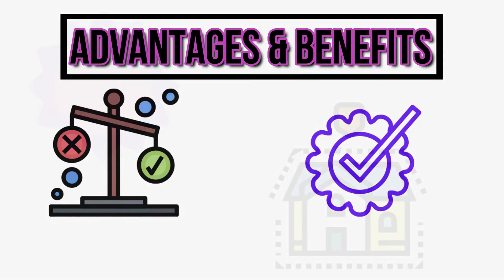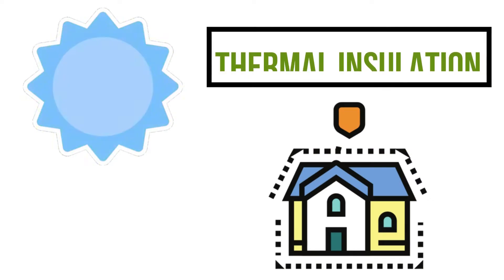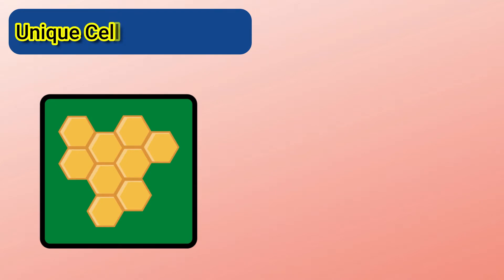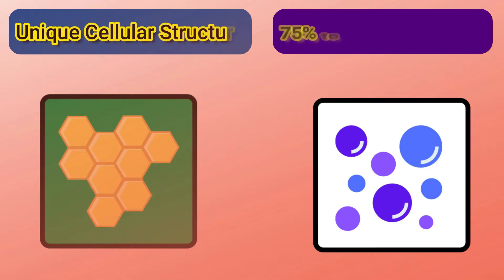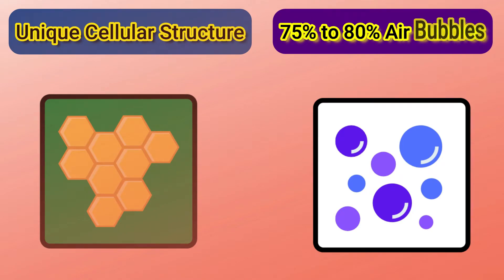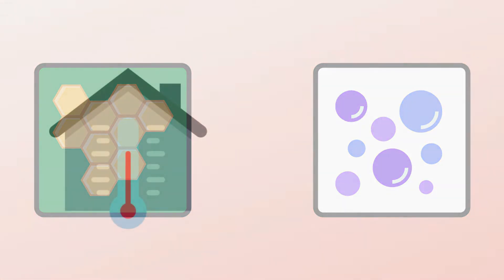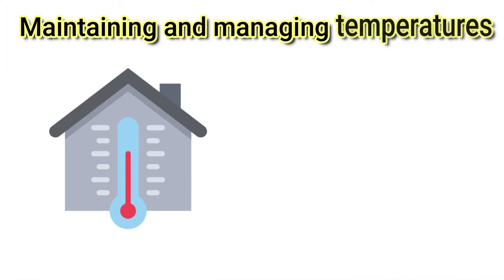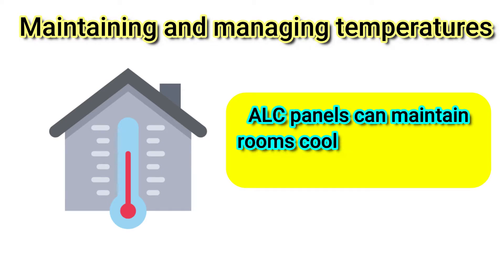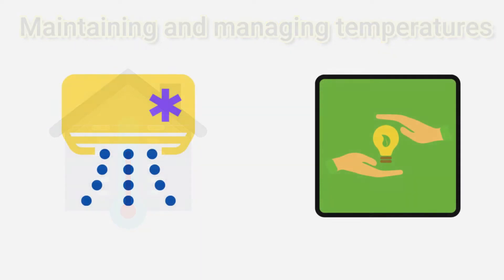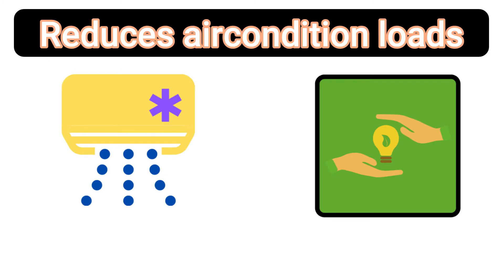Next, we will discuss about the advantages and benefits of ALC Panels. The first one is thermal insulation. ALC Panels have a unique cellular structure and constitute 75-80% air bubbles. The low thermal conductivity is due to this high porosity. These ALC Panels can maintain rooms cool in summer and warm in winter, which in turn reduces the air conditioning loads and saves energy.